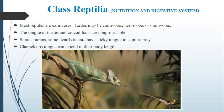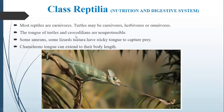The tongue of turtles and crocodiles is non-protrusible. Some reptiles have a very long tongue almost equal to the body length of the organism. This type of tongue comes out of the body and captures prey. This is called a protrusible tongue. Turtles and crocodilians don't have this type of tongue.